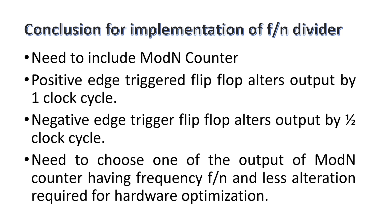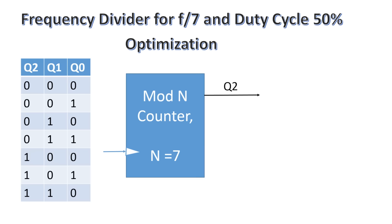Let us conclude and generalize the method for implementing an f/n frequency divider. First, we need to include a mod-n counter. After the output of the mod-n counter, a positive-edge triggered flip-flop with an OR gate can alter the output by one clock cycle, while a negative-edge triggered flip-flop alters the output by half a clock cycle. The very important point is to wisely choose one output of the mod-n counter having frequency f/n where less alteration is required, for better hardware optimization.